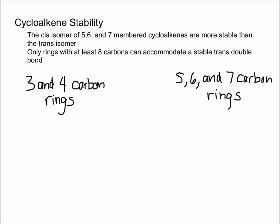In this video I'm going to talk about different cycloalkene stabilities, specifically how many carbon rings are most stable and whether trans or cis isomers are more stable.